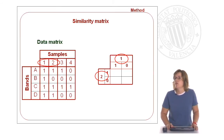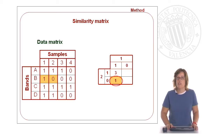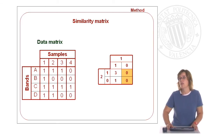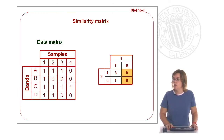To establish this comparison, imagine we want to compare samples one and two in our example. We have three bands which are present in both samples, so A will be three. We have one band which is present in sample one but not in sample two, so C will be one. We have no bands which are present in sample two but not in sample one, and no bands which are not present in either sample one or two.